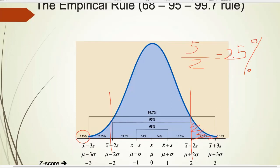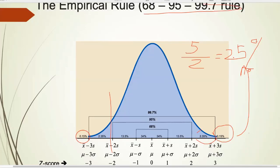You might notice the diagram shows 2.35% rather than 2.5%. That's because 2.35% plus 0.15% adds up to 2.5%. So the probability of someone's height being more than two standard deviations above average is 2.5%. For more than three standard deviations, you can read it directly from the diagram — that's 0.15%. Make sure you copy all those numbers onto your note card.